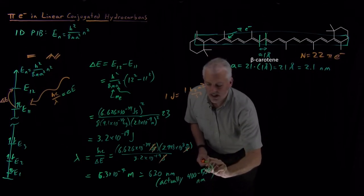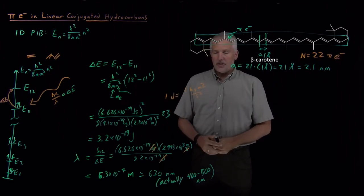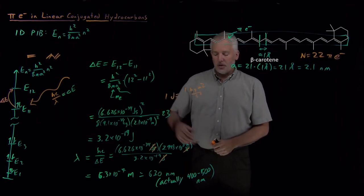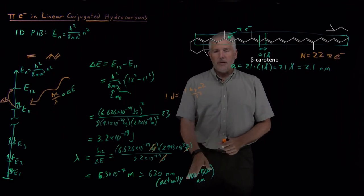So here we begin to see the limitations of the particle-in-a-box model. We predicted 630 nanometers. We didn't actually deserve that many sig figs because the model is only an approximate model. In the real world, beta carotene absorbs at about 400 to 500 nanometers.